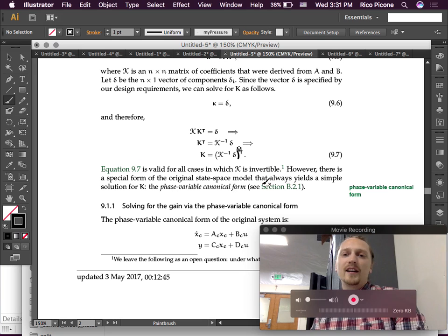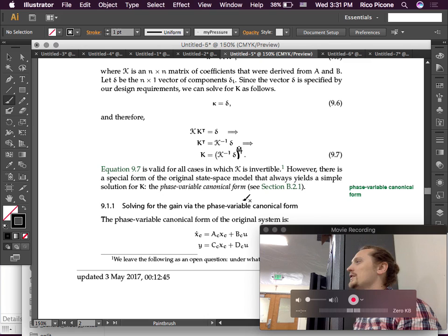All right, so now we have the phase canonical form in our back pocket. We can always change to phase canonical form if we want. We'll just whip up a controllability matrix, and we're off to the races. We're good to go.